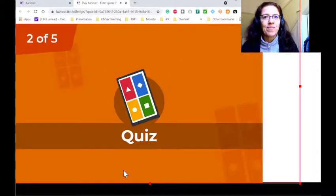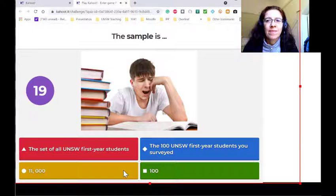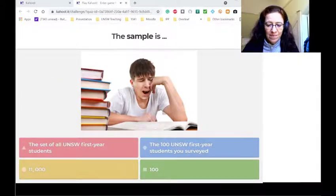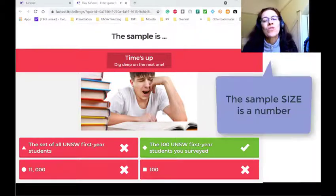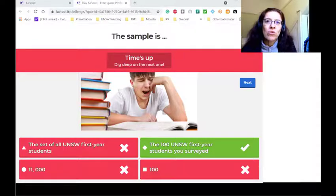Next question. So the sample is a subset of the population. So because you can't look at the whole population very often, you're going to take a subset, a sample, and look at those. So in our story, the sample is these 100 students you will be surveying.